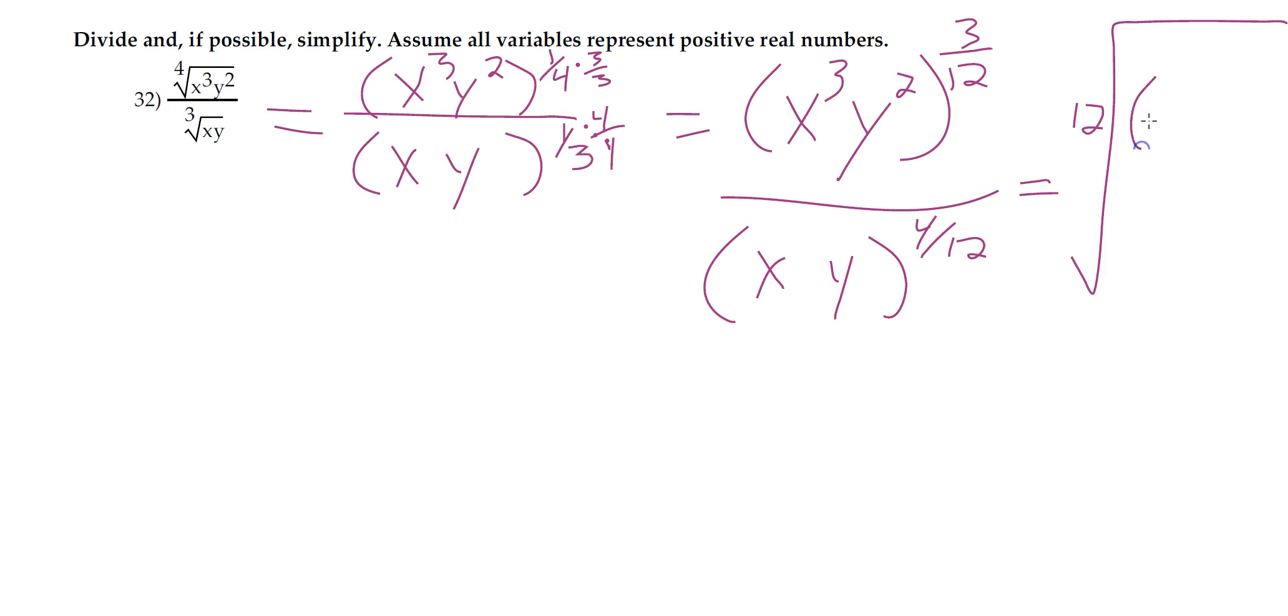Now what's left inside on the top, we have x cubed, y squared, cubed. And on the bottom, we have x, y to the 4th power. So let's simplify that. Twelfth root, power to a power we multiply, so that's x to the 9 on top and y to the 6th. We have x to the 4 and y to the 4.